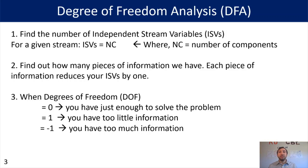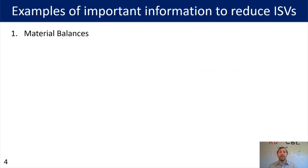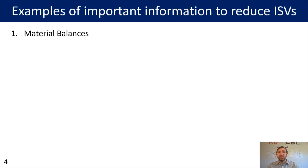We're going to go through some examples for reducing our independent stream variables, our ISVs. The first one is a material balance, and for a material balance that's tracking the total amount of material coming into your system and the total amount coming out of your system. It could also be the amount of one of your components going in and out of your system. Another piece of information you could use is energy balances — same idea as a material balance except we're now looking at the energy input and output for our system.